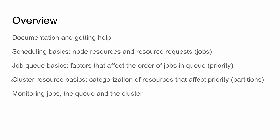Then we'll talk about cluster resource basics — the categorization of resources that affect priorities, which are partitions. How do we categorize properties of the system so that jobs requiring certain resources get the chance to run, and also allow jobs to fill gaps when utilization is high? Once we go over how jobs move from the queue to the running state, we'll cover monitoring jobs whether they're in the queue or running, monitoring the queue to understand how long jobs might be waiting, and also monitoring the cluster itself — how busy it is with running jobs, allocations, and what's idle.